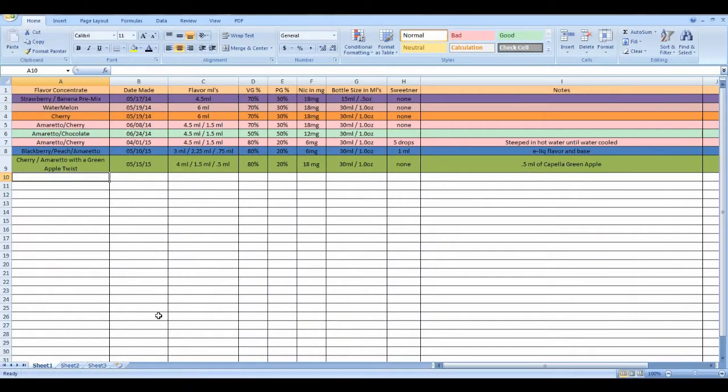Here's what I'm talking about. You can see it's an Excel spreadsheet. Here's my flavor concentrate, the mix. Cherry Amaretto with a Green Apple Twist, the date I make it, the flavors in milliliters: 4ml cherry, 1.5ml amaretto, and 0.5ml green apple. We're doing 80% VG, 20% PG, 18 milligram nicotine into a one ounce bottle. I have not added any sweetener. You can see here I did some with drops, some with a mil. We're going to start with none.